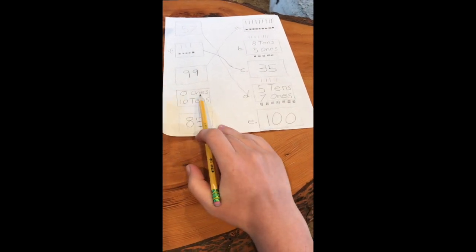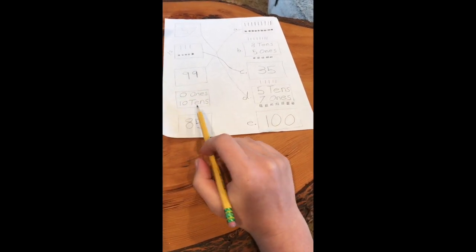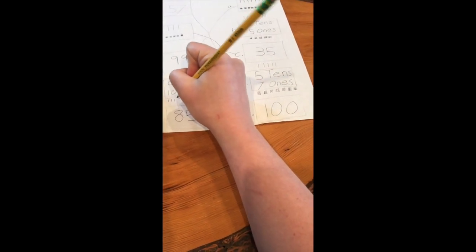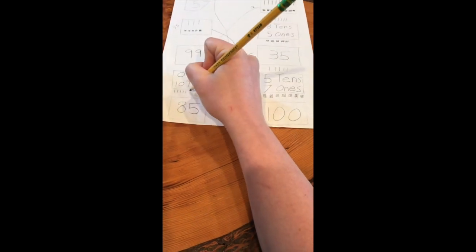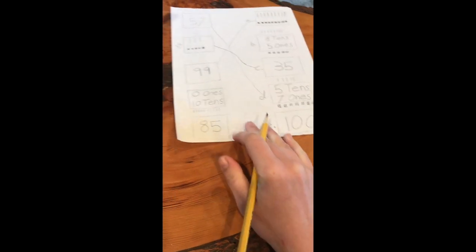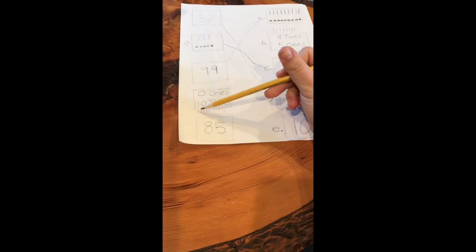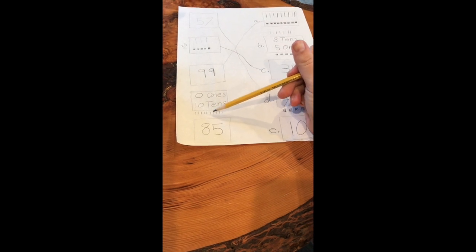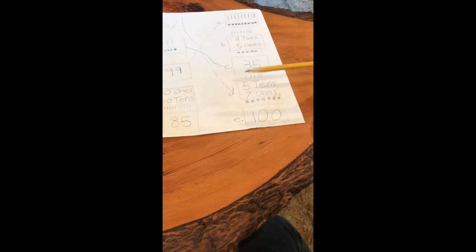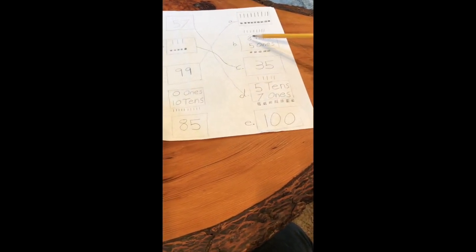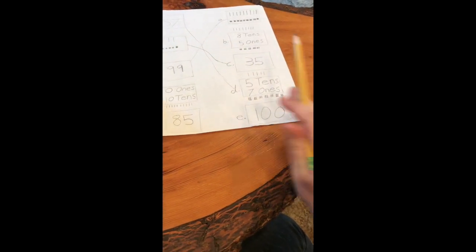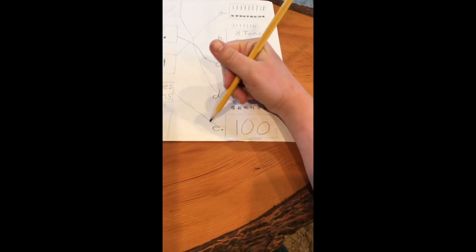This one says there are zero ones and 10 tens. Oh my goodness, that's a lot of tens. Let's draw it: 1, 2, 3, 4, 5, 6, 7, 8, 9, 10. Help me count. This is a big number: 10, 20, 30, 40, 50, 60, 70, 80, 90, 100. Let's see, B is eight tens, five ones. That's 85. Here's 100. Draw a line to 100.